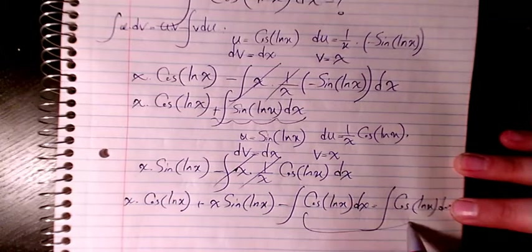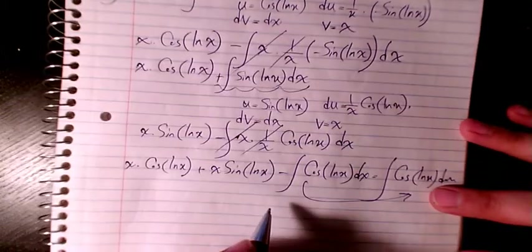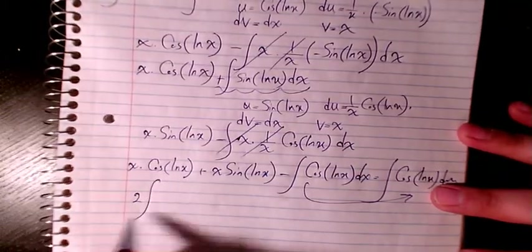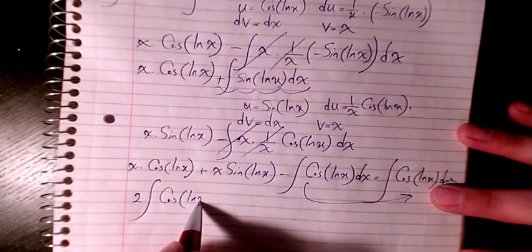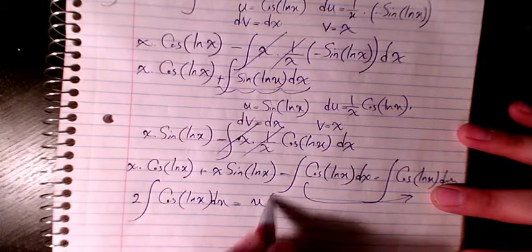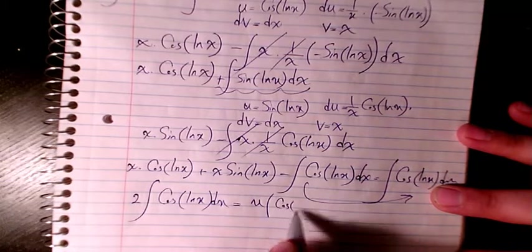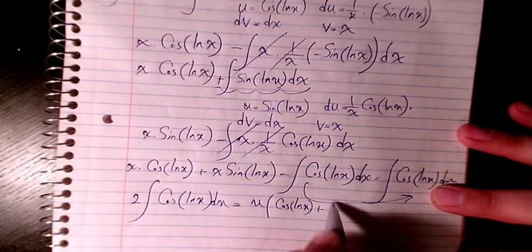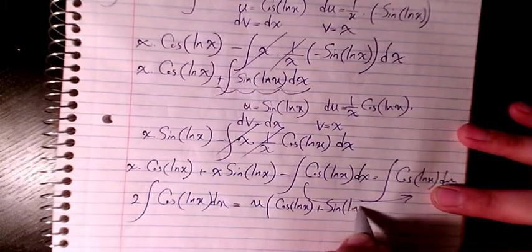So this one moves to the right hand side. It will be 2 cosine ln x dx equals x times cosine ln x plus sine ln x.